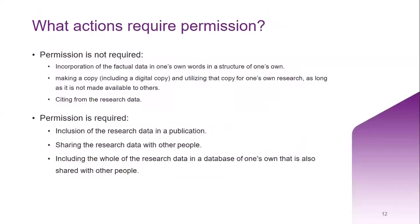As researchers, when you need to obtain copyright clearance is the main question. You do not need copyright clearance if you incorporate factual data in your own words in a structure owned by yourself. You may not need to obtain permission if you are making a copy for your own research, as long as it is not made available to others. However, you do need copyright clearance if you are going to include secondary data in a publication or plan to share that data with other people, including incorporating it into your own database that you intend to share.